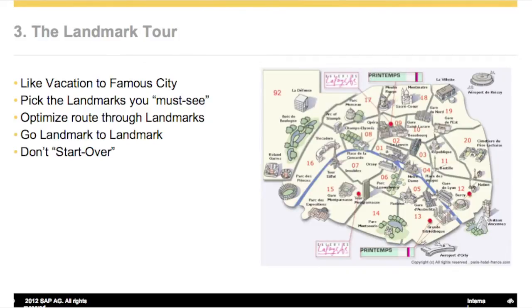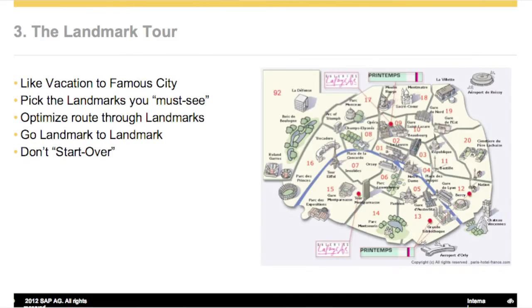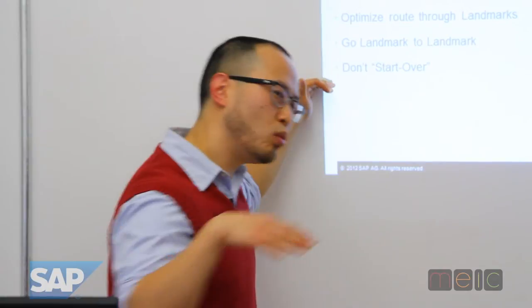Somewhat linked but slightly different is the landmark tour. The idea is like going on vacation — for example, this is Paris. You pull up the map, pick all the landmarks you want to go to, and then figure out the best route to get around to all of them. The landmark tour is where you isolate what you call landmarks — important states, features, pages — and then connect the dots between them. You don't brute-force every combination, but you cover every landmark in an optimized route, going from landmark to landmark in one trip without starting over.